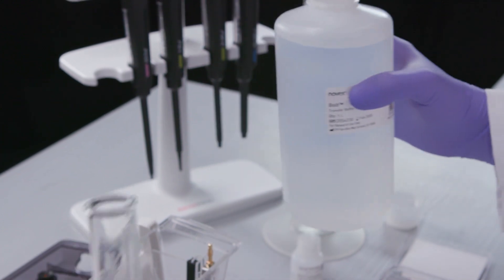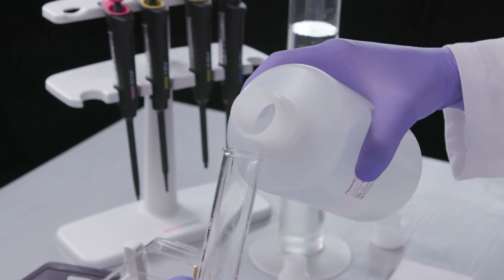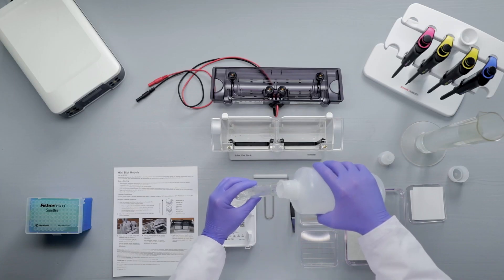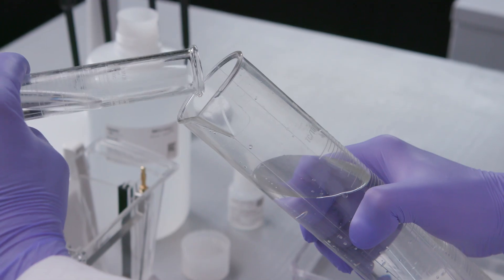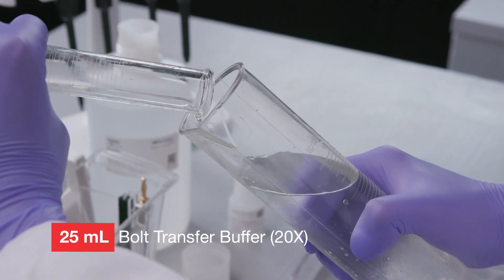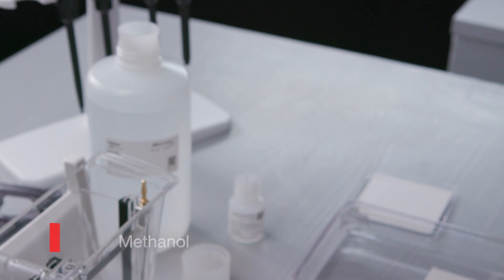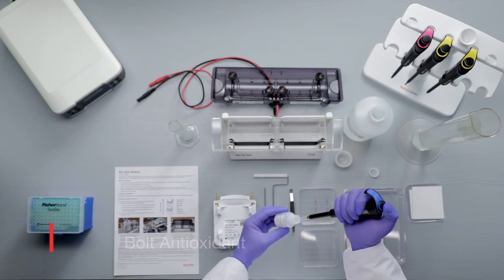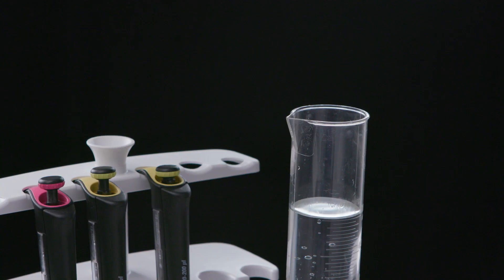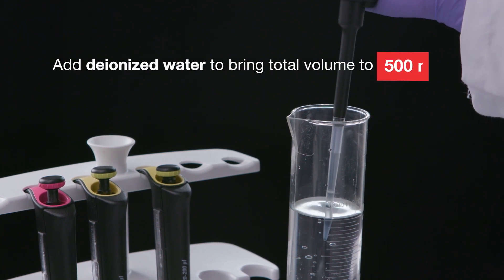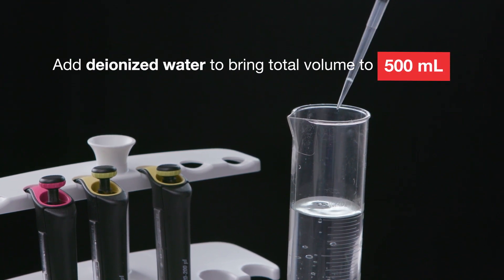Approximately 250 milliliters of transfer buffer is required for each transfer. Prepare transfer buffer by adding 25 milliliters of 20X bolt transfer buffer, 50 milliliters of methanol, 500 microliters of bolt antioxidant, and bring the total volume up to 500 milliliters with deionized water.